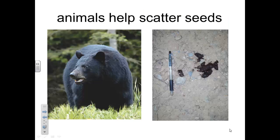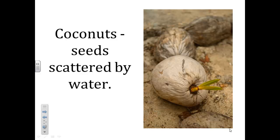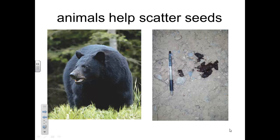Ways that seeds spread. In some plants, seeds just plop onto the ground and begin to sprout, but scattering seeds is not always that simple. Remember how some animals were helpful in pollination? They also help plants by scattering seeds. Animals may spread seeds that are inside tasty fruit. For example, when animals eat berries, the berry seeds might pass through the animal's digestive system and sprout far from the original plant. What other ways do you know that seeds can be spread?